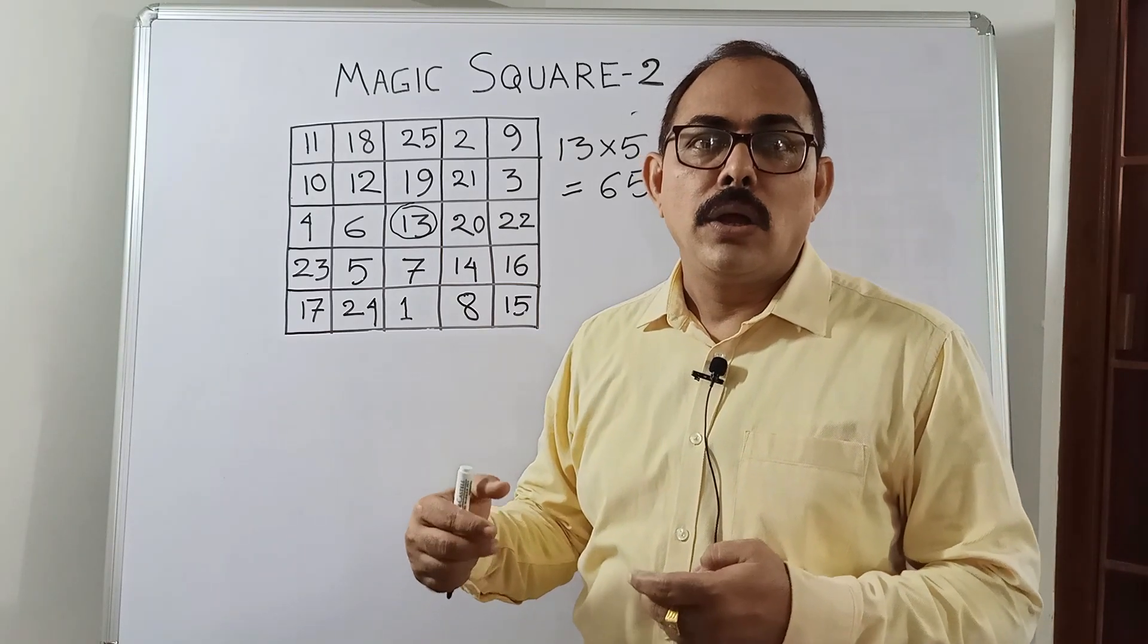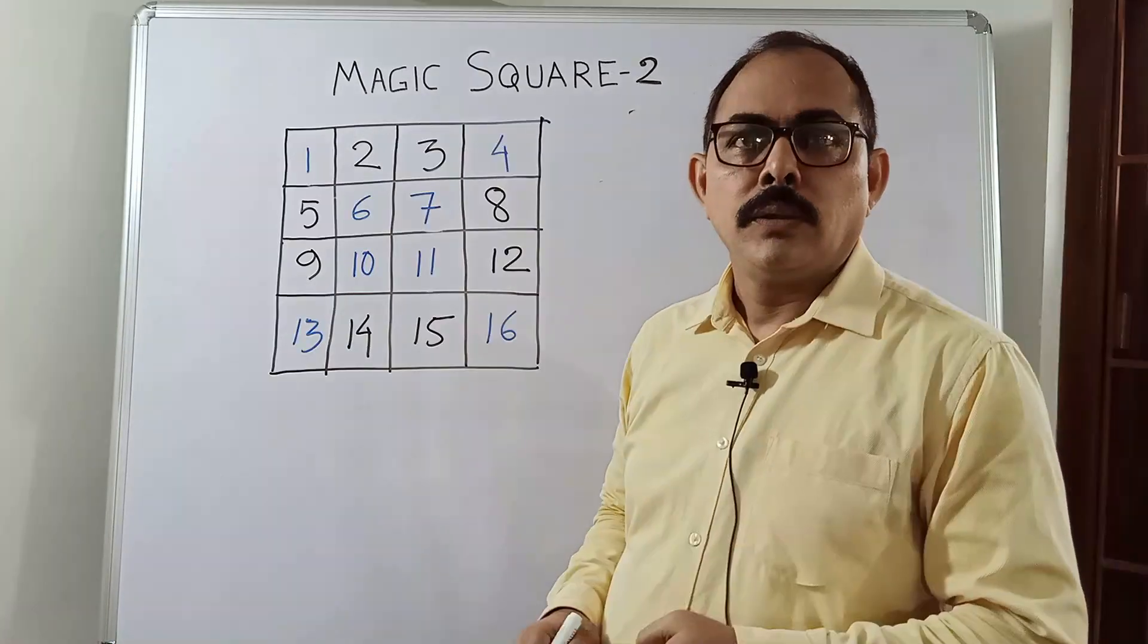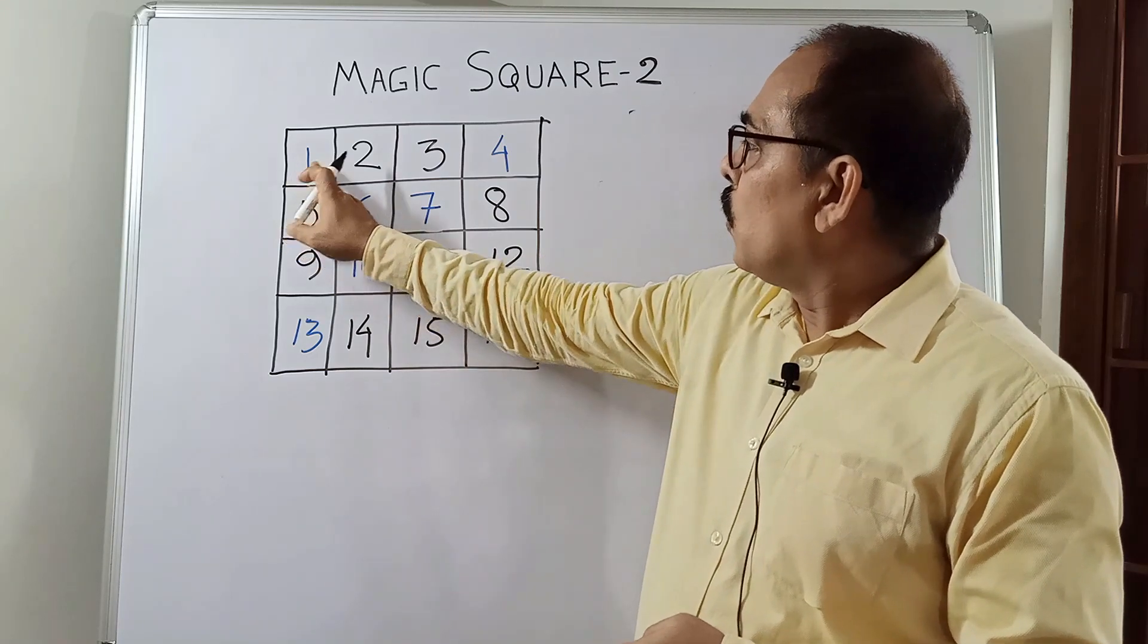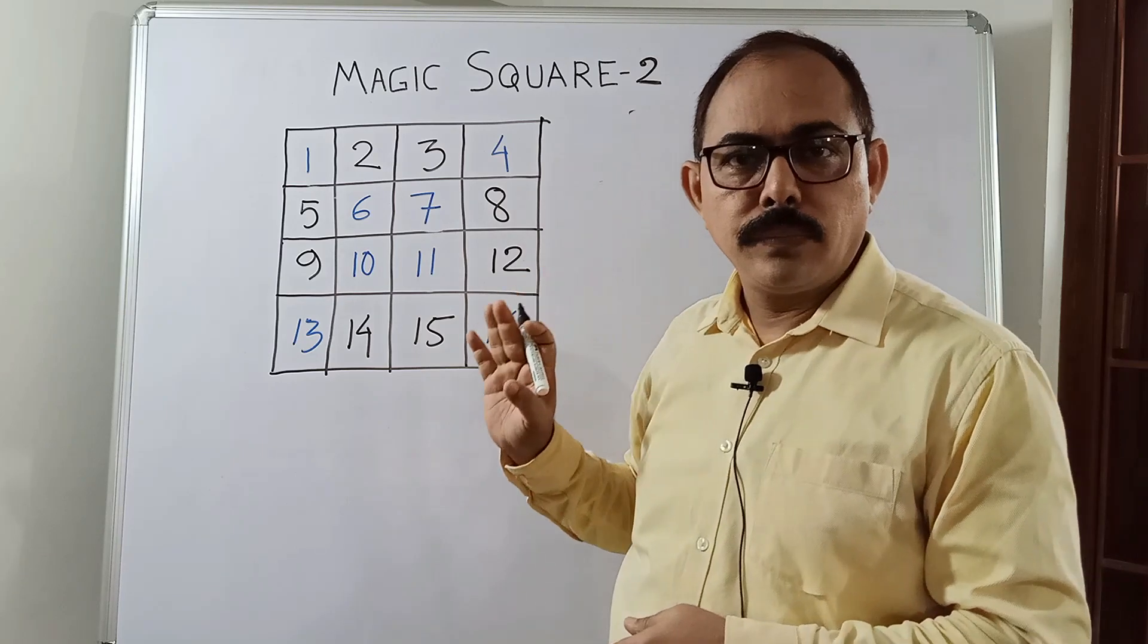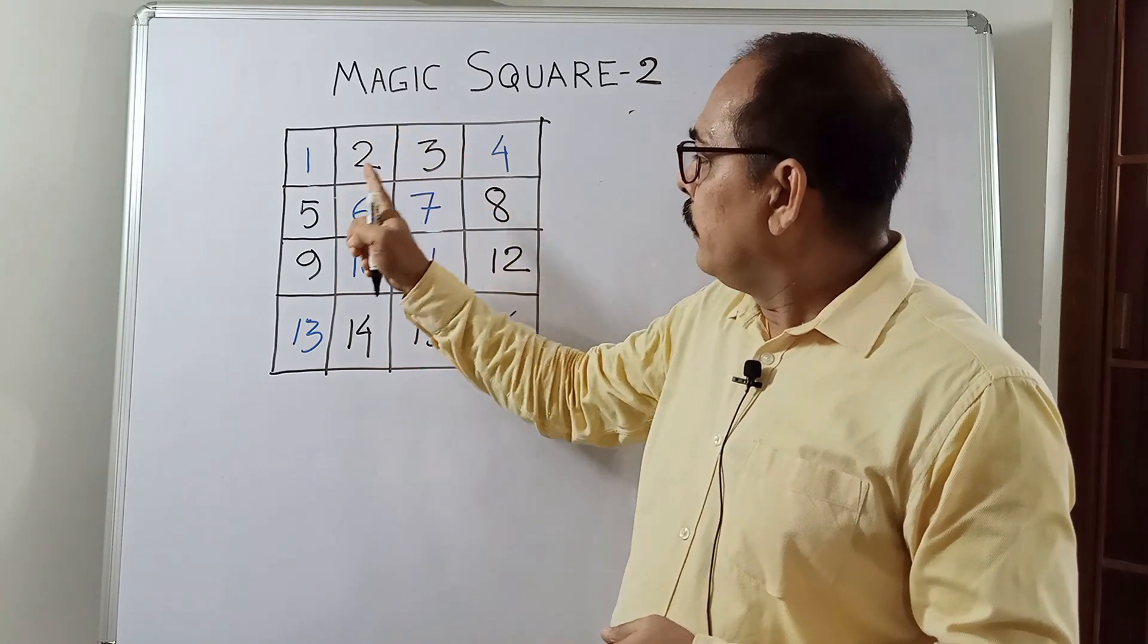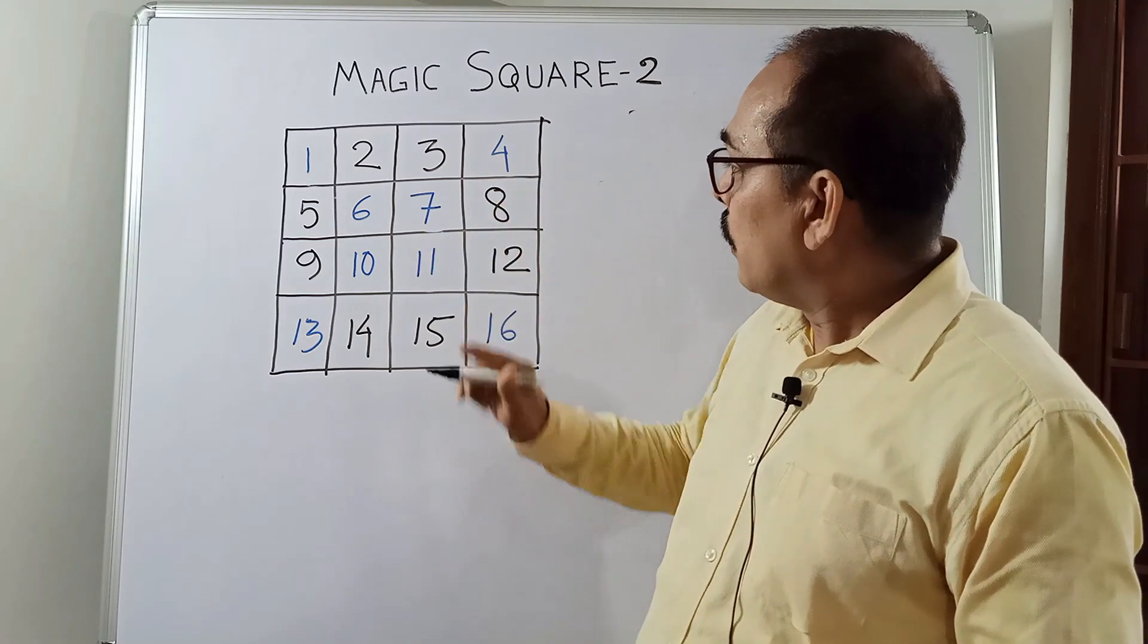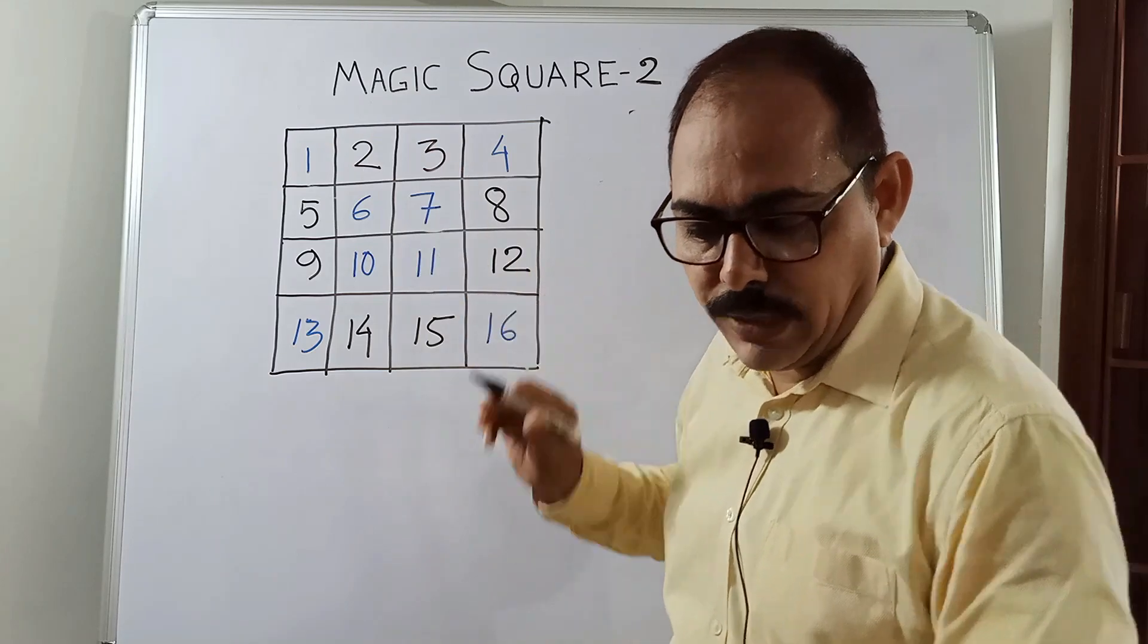So let us now start an even number, that is 4 by 4 order magic square. For making a 4 by 4 order magic square, we will first write down 1, 2 through 16, all the numbers as usual. Now, 2, 3, 5, 8, 9, 12, 14, 15, these numbers will keep fixed.